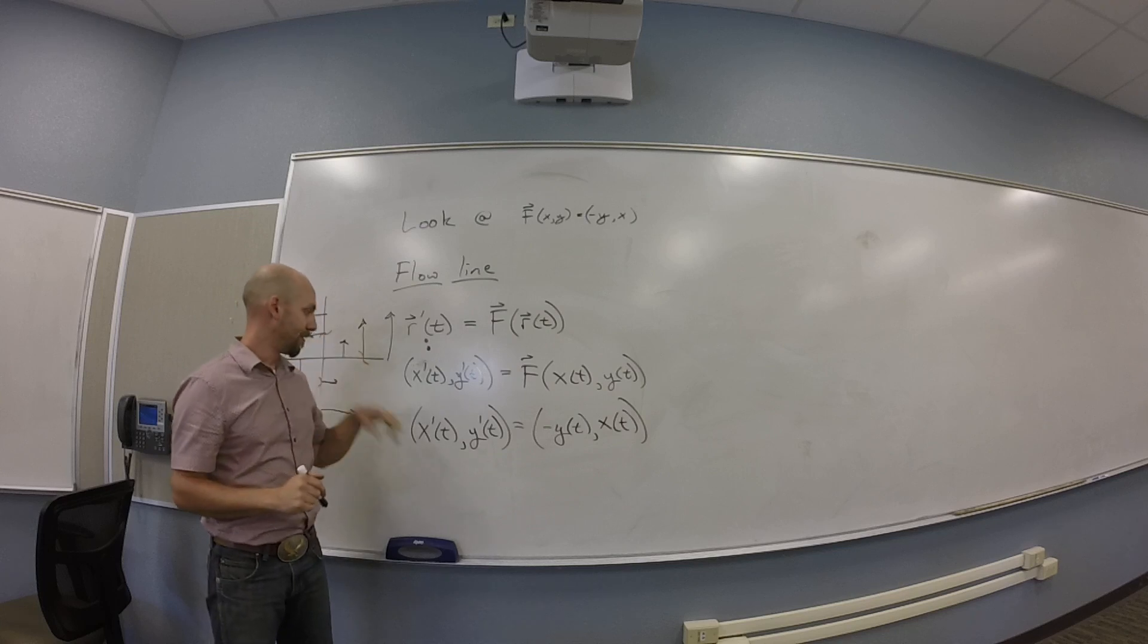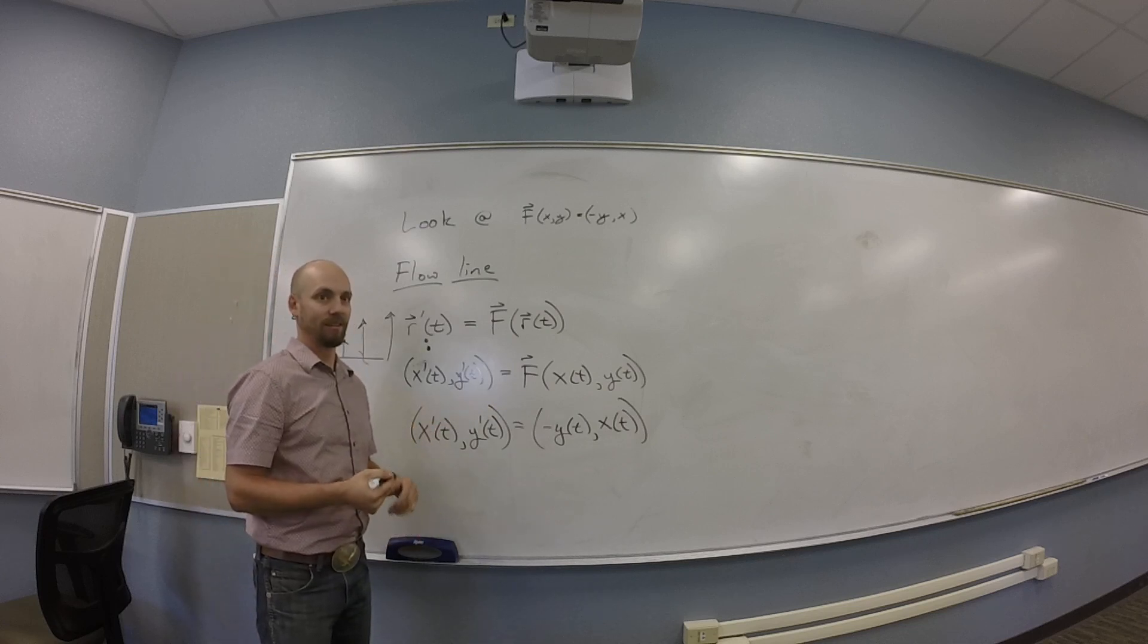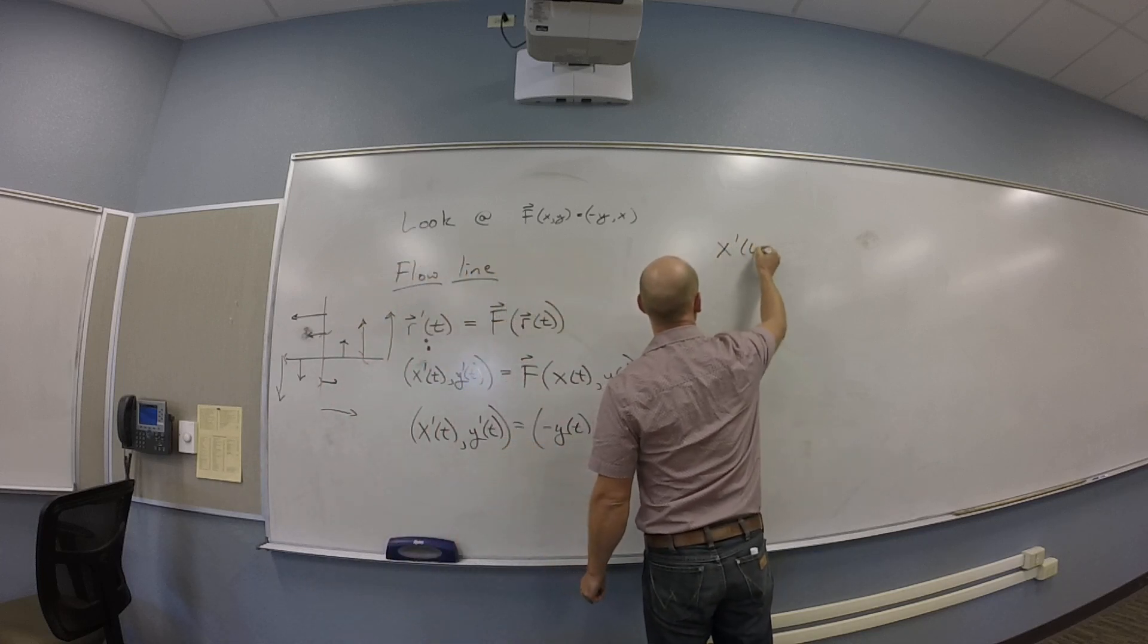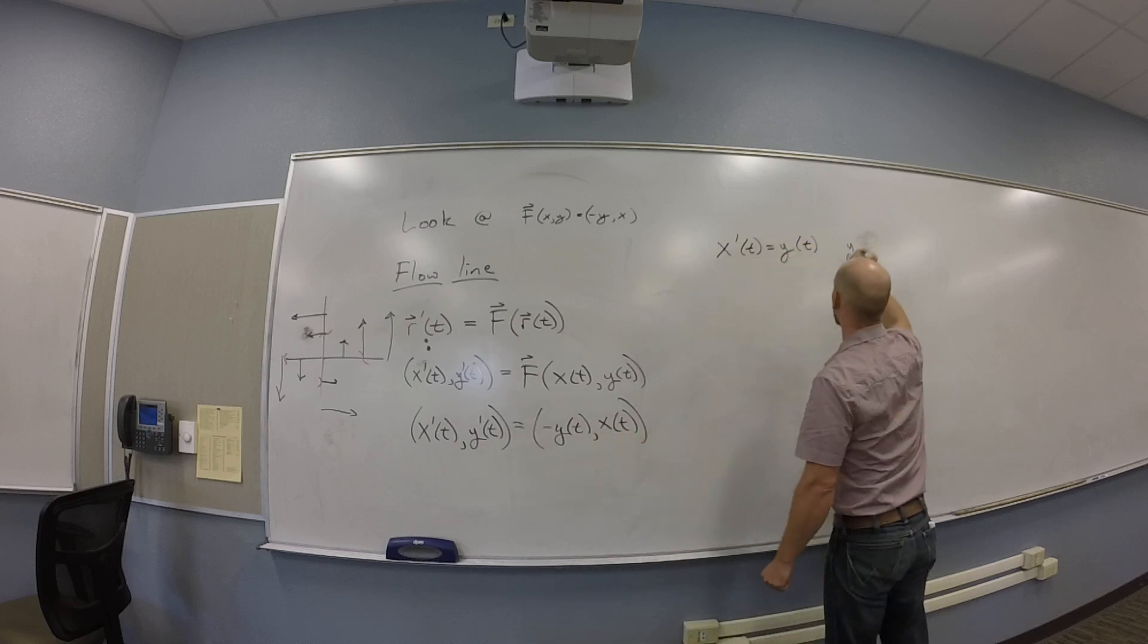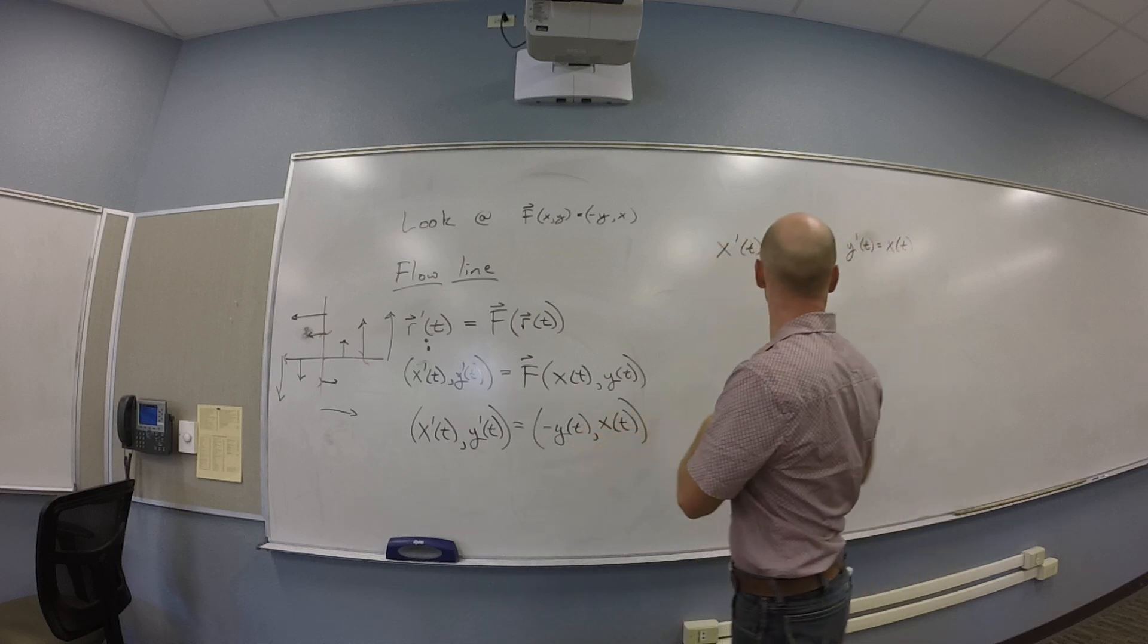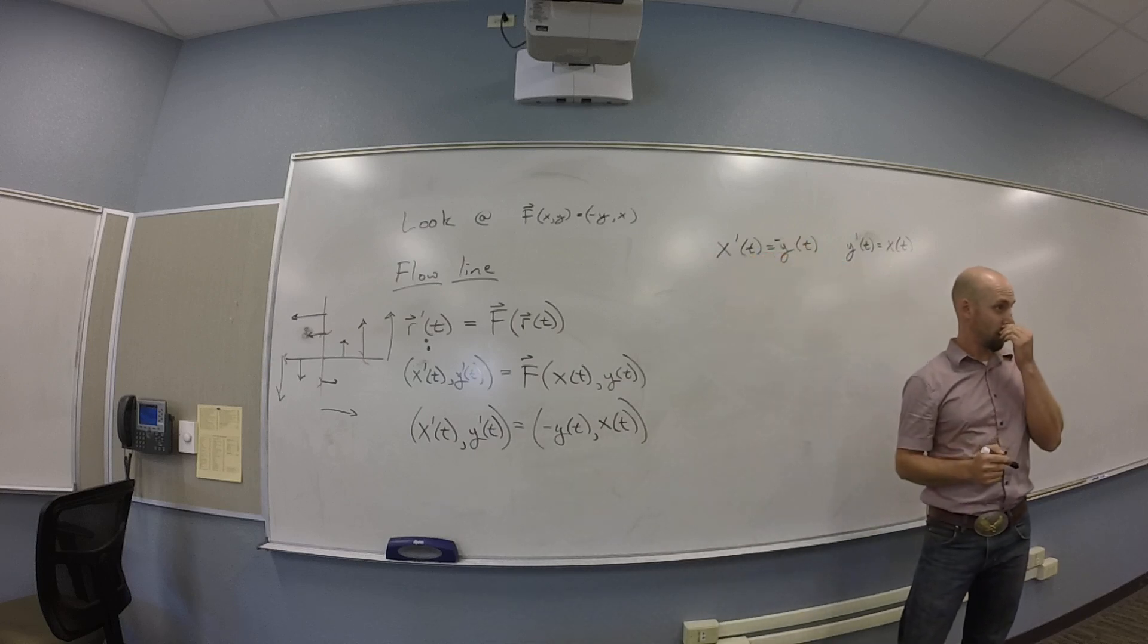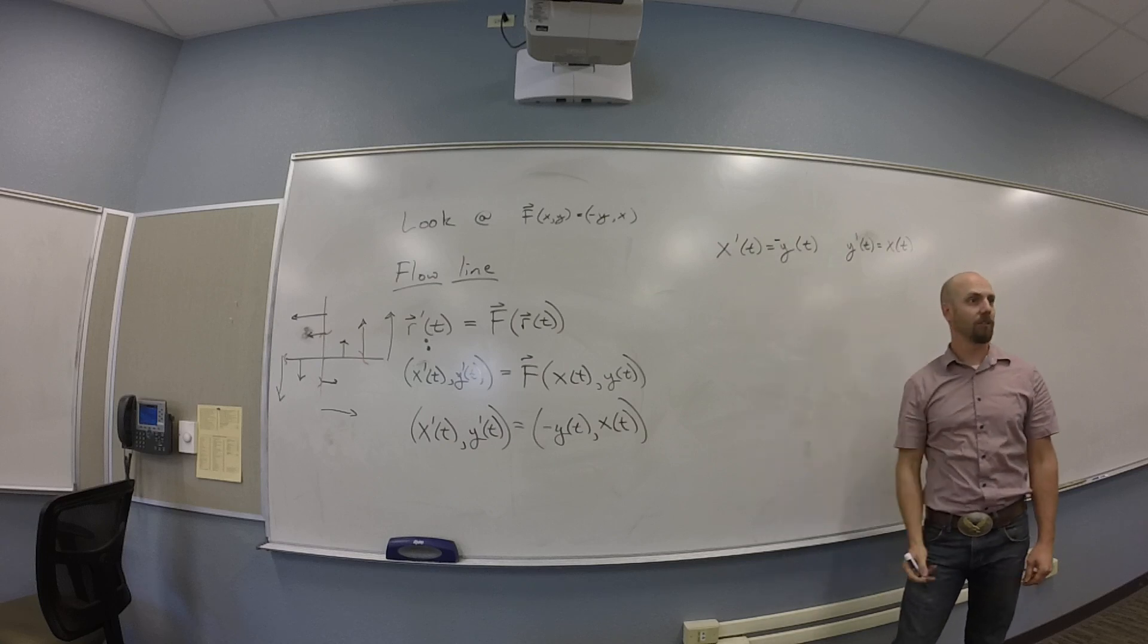Now, oh hey, look. That's two equations. You guys see this? I got x prime of t is negative y of t. And I got y prime of t is x of t. You guys with me on this? Now we are. Cool. Do you know equations x and y that satisfy these? Sine and cosine?